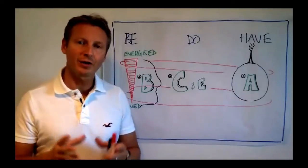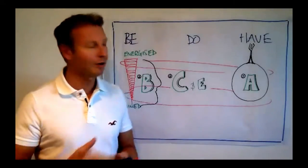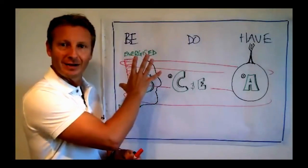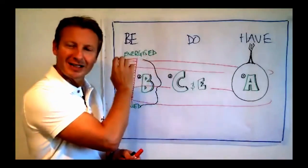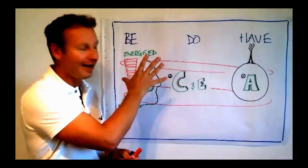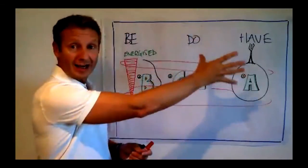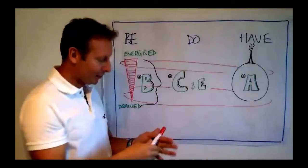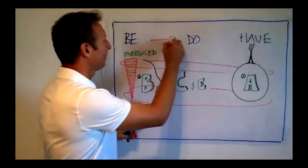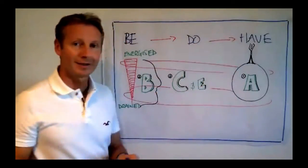But I'd like you to start your goal setting around be first. How do you want to be? What are the states of being? Okay? Start that first. Then what do you want to do? Then what do you want to have? But operate very much in that direction. Be, to do, to have.